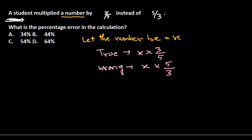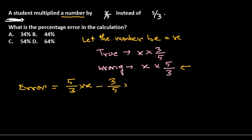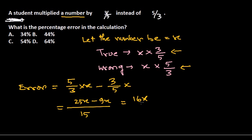So what is the error? The error equals (5/3)x minus (3/5)x — that is, the wrong value minus the right value. Calculating this: (25x − 9x) / 15 = 16x/15. So the error value is 16x/15.